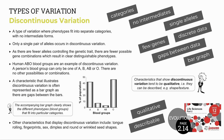Discontinuous variation, in contrast, has distinct groups or categories with no intermediate forms and no in-between combinations. These characteristics are often controlled by single alleles or few alleles, so there are fewer possible gene combinations. The data is discrete with gaps between the data, represented in bar graphs to emphasize those gaps. These characteristics are qualitative — they can be described. Human blood groups are a good example, as humans are either A, B, AB, or O. Other examples include tongue rolling and dimples.